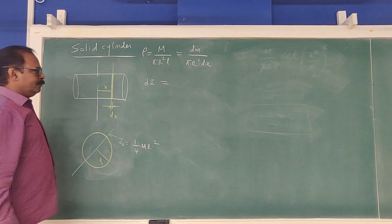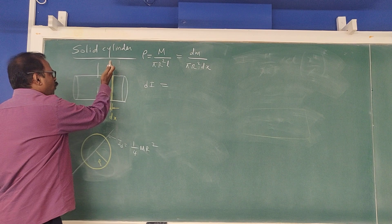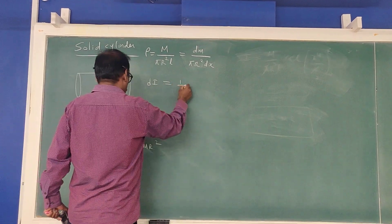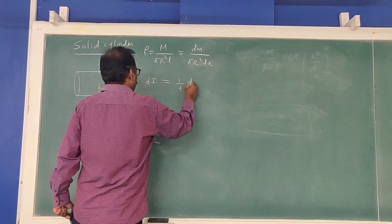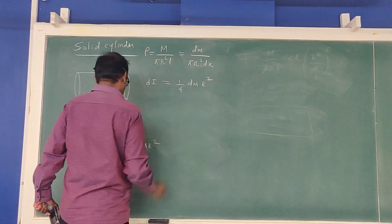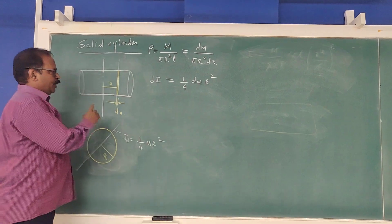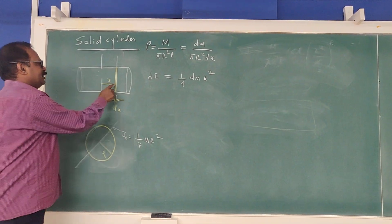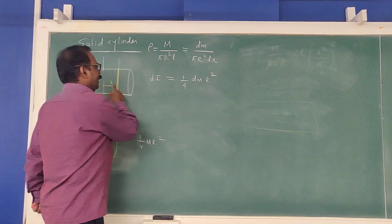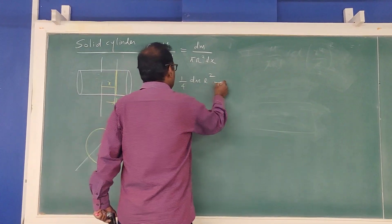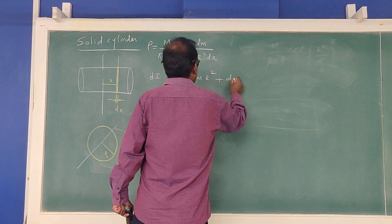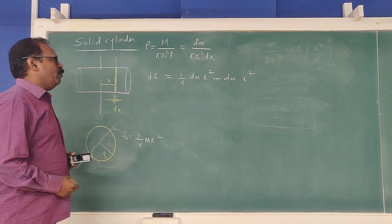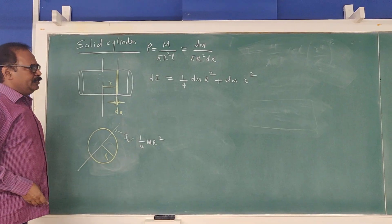The density of the cylinder is mass divided by volume. For the circular disk element, dm = ρ · πR² · dx. The moment of inertia of a circular disk about any diameter is ¼ dm · R². Using the parallel axis theorem, we add the contribution from the disk being displaced by distance x from the center: dI = ¼ dm · R² + dm · x².